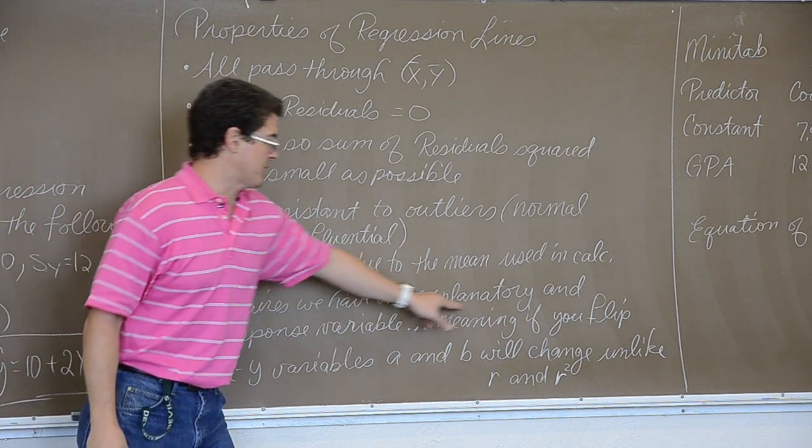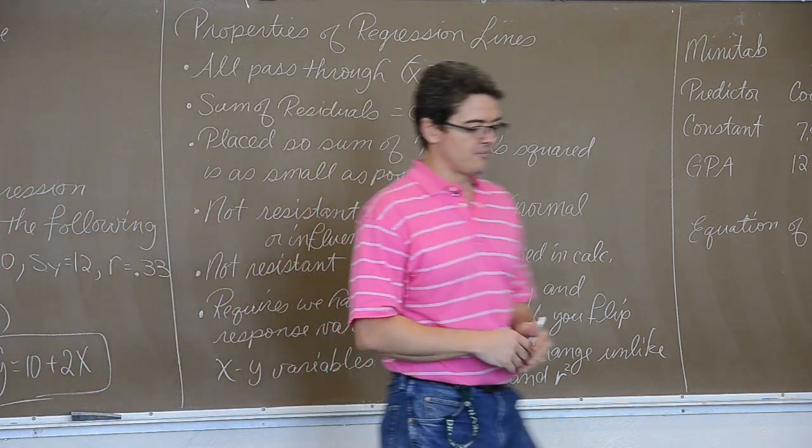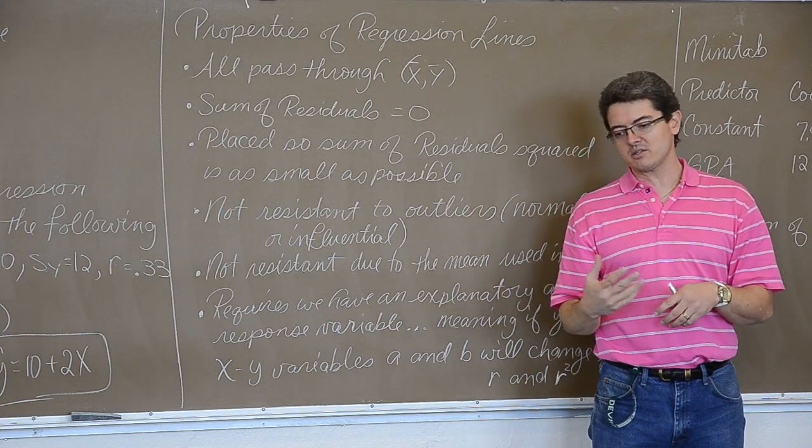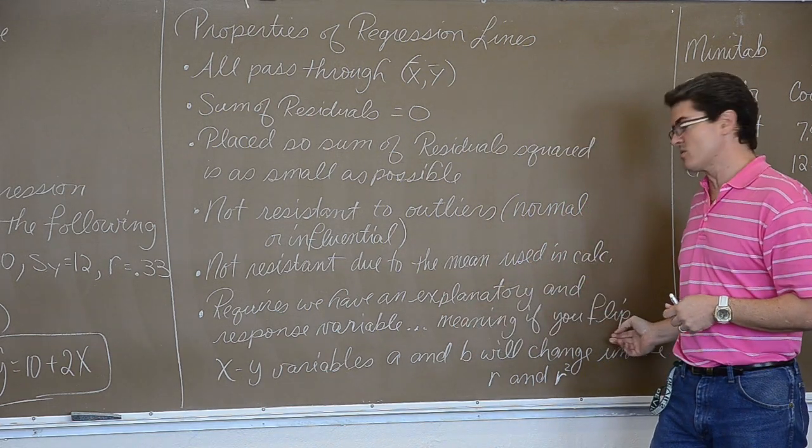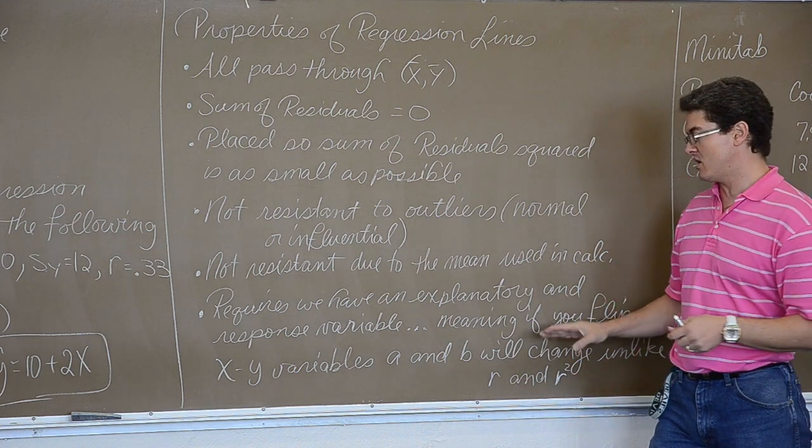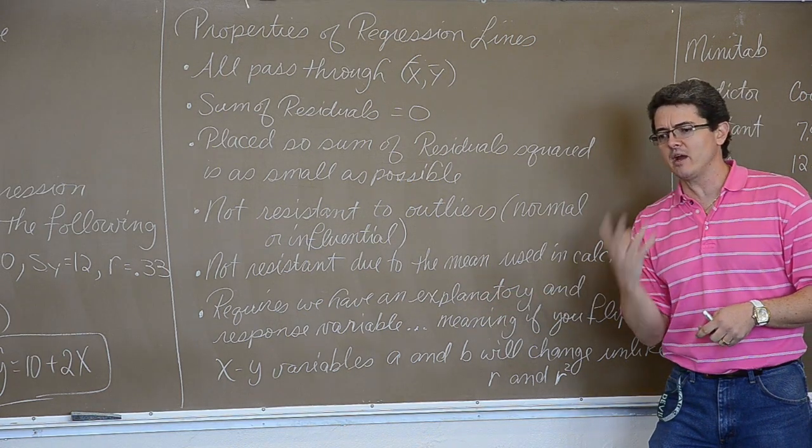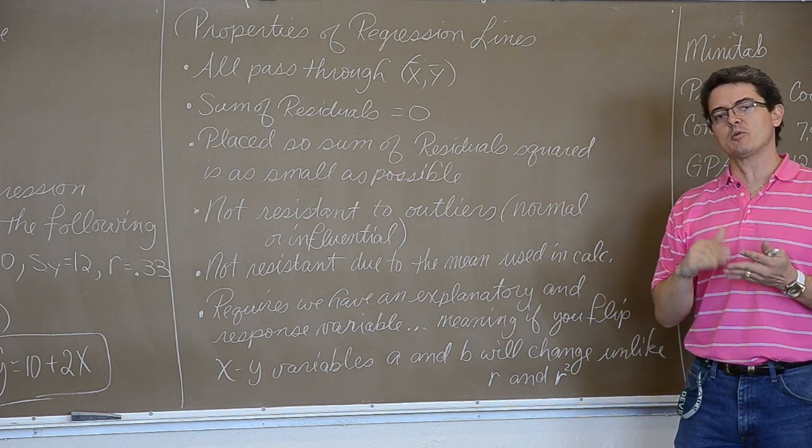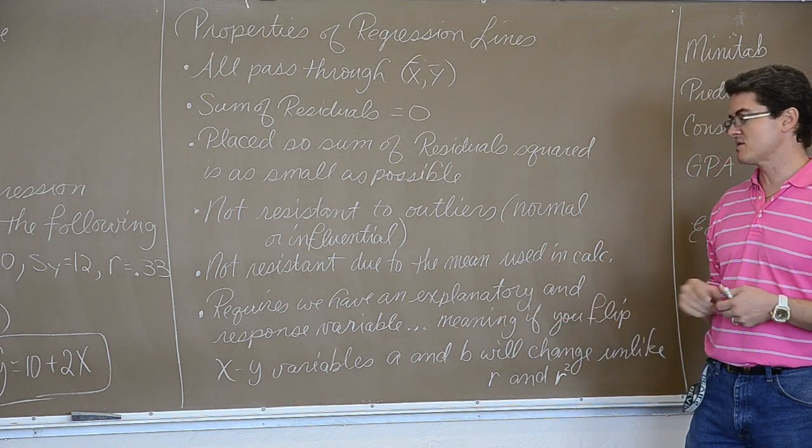Requires we have an explanatory and a response variable. Meaning that if you have a regression line and you flip the x and y axis for some reason, maybe you want to switch what you are predicting because you always predict the y values. Well, if you do that your x and y axis are going to change. Your slope is going to change. Your y intercept is going to change. So you don't have to have a clear explanatory variable, but what is on the x axis and what is on the y axis will determine the slope and the y intercept. If you switch those around, of course they are going to change. Hence the statement.